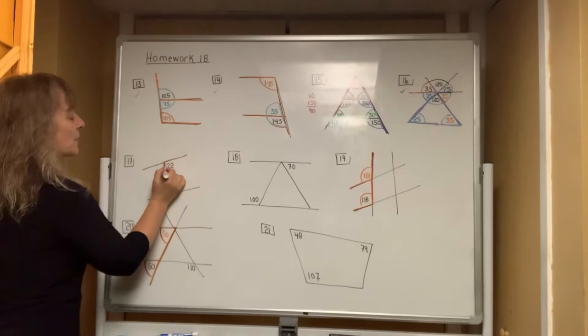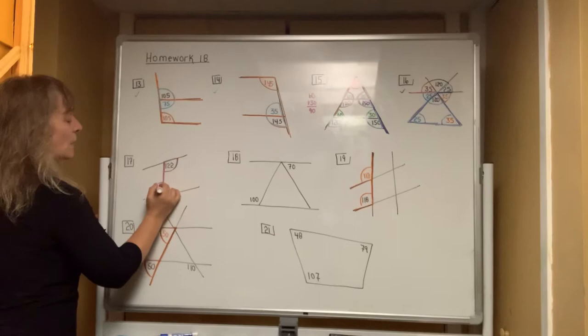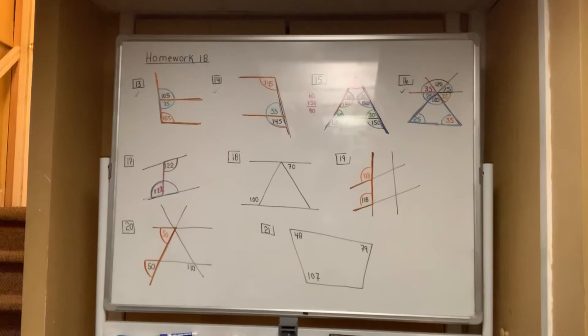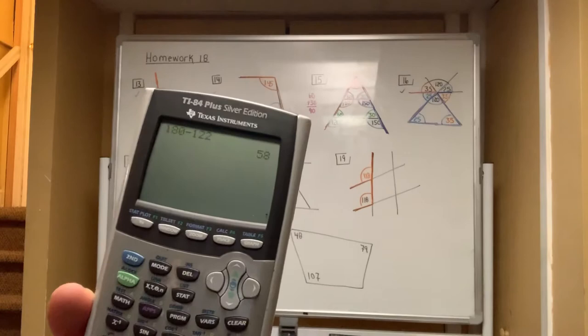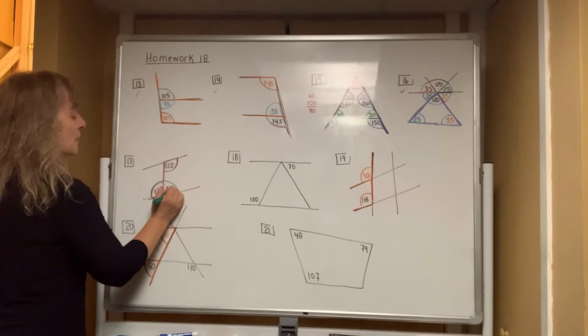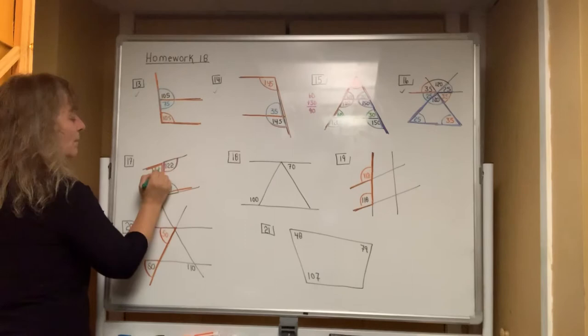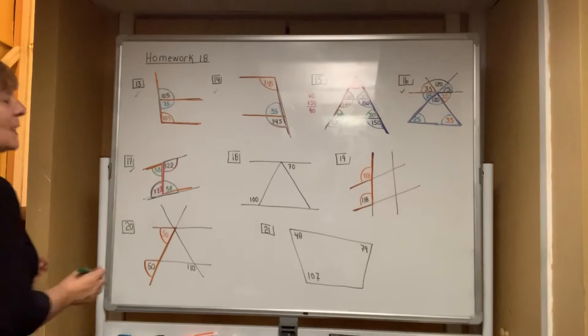In number 17, I definitely see the letter Z. So if this angle is 122, then this one is also 122. You also have a linear pair — two angles that make 180 degrees. Take 180 minus 122 to get 58. But if this angle is 58 degrees, there's another Z in the diagram, which means there is a 58 up here also. All angles are done in number 17.